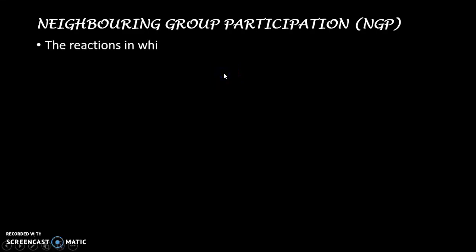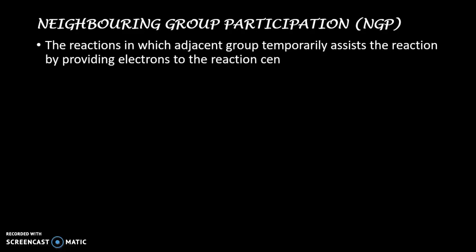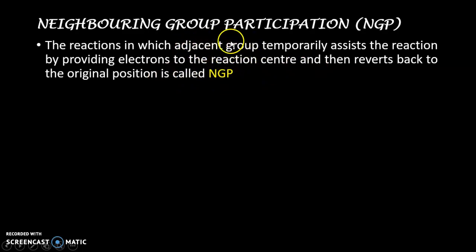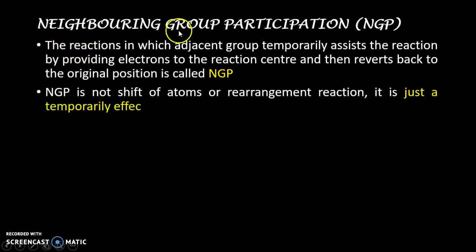Now we will see what is neighboring group participation. This type of effect is observed in nucleophilic substitution reactions — you know SN1 reaction and SN2 reaction. In neighboring group participation, the reaction is one in which an adjacent group temporarily assists the reaction. This adjacent group is generally an internal nucleophile having a lone pair of electrons. This internal nucleophile attacks on the reaction center and helps to remove the leaving group, and after that it reverts back to the original position. This phenomenon is called NGP.